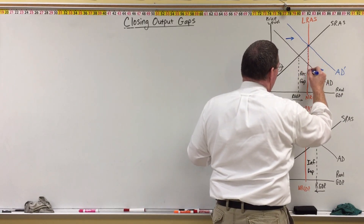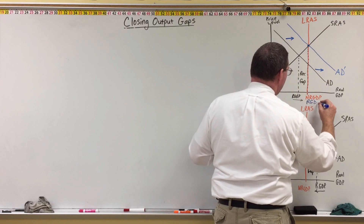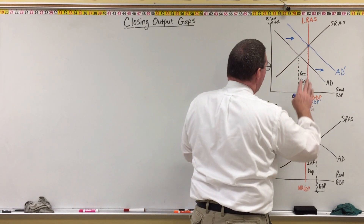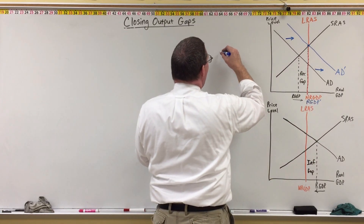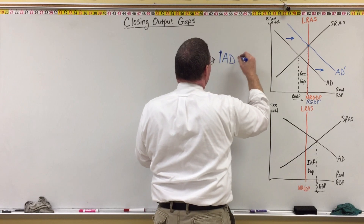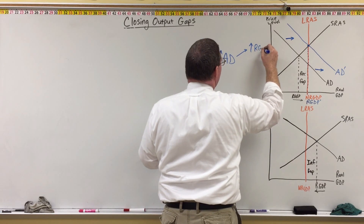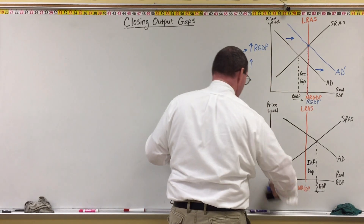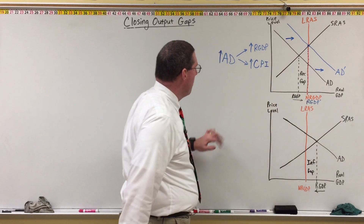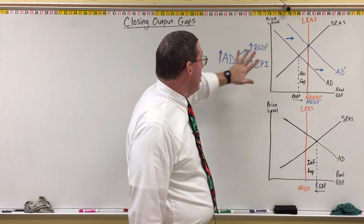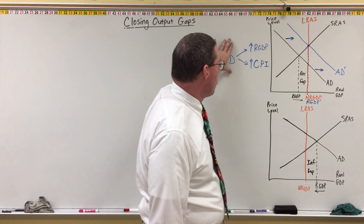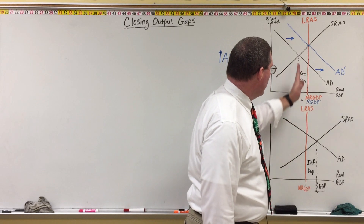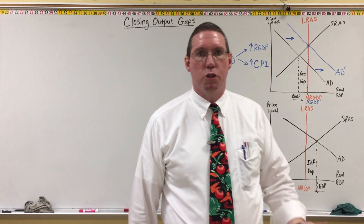We have a new real GDP, our GDP prime. When aggregate demand increases by shifting to the right, we will close the recessionary gap, bringing the economy back into long-run equilibrium. An increase in aggregate demand will lead to an increase in real GDP and also an increase in CPI. We're focused on the effect on real GDP: an increase in aggregate demand leads to a rightward shift, increasing real GDP to equal natural real GDP, closing the recessionary gap.